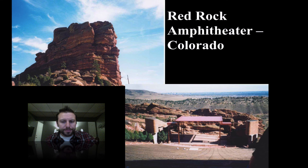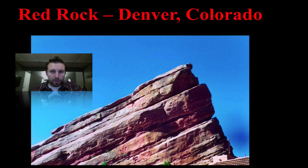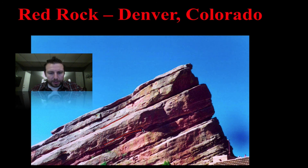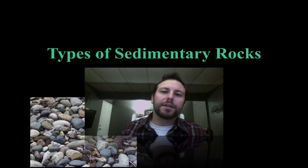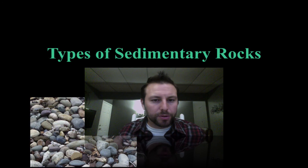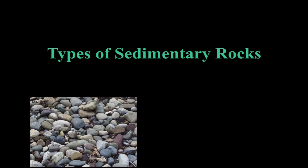This is Red Rock Amphitheater out in Colorado — once again we see nice parallel lines. And Red Rock in Denver, Colorado is a little different: the parallel lines are tilted, meaning they were horizontal at one point until something happened, which we'll learn about in a couple of weeks. Before we move on, we'll end here. I hope you enjoyed this little introduction to sedimentary rocks — stay tuned for the next one, bye-bye.